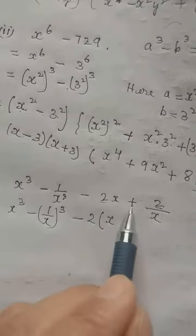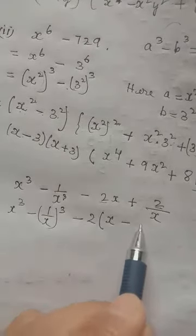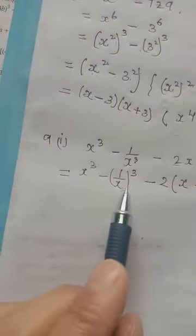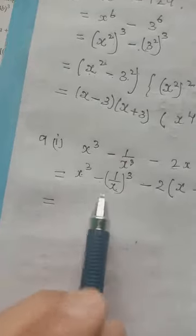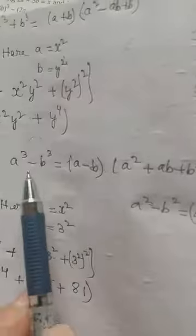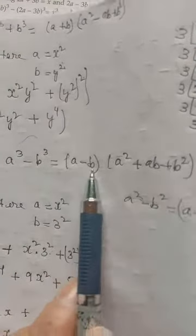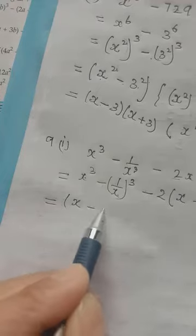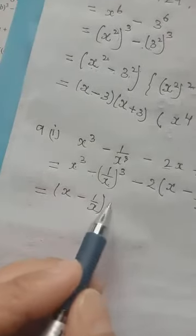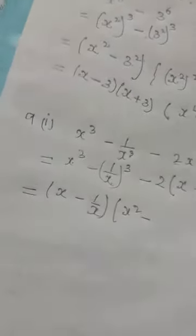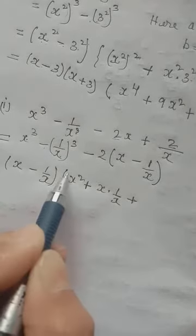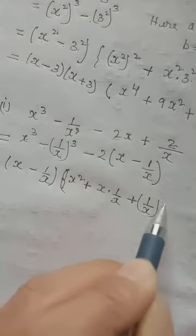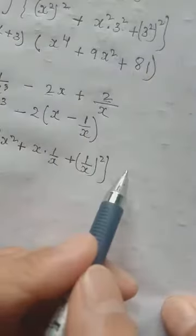Here we have two and there we have two, so we can take it out. Then we are left with x minus 2; the 2 we already put outside, so we are left with 1 over x. For the first part we will apply the formula a³ minus b³, where a is x and b is 1/x. It will be (a - b)(a² + ab + b²), so it will be (x - 1/x)(x² + x·(1/x) + (1/x)²).